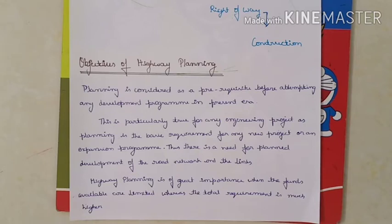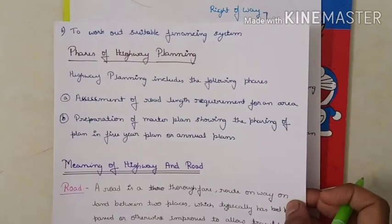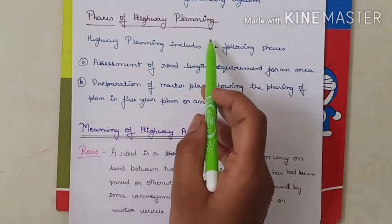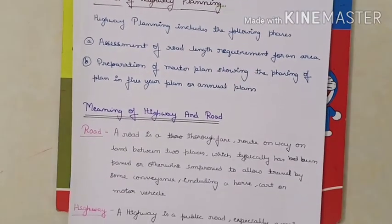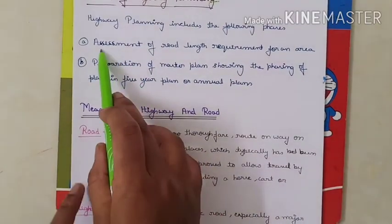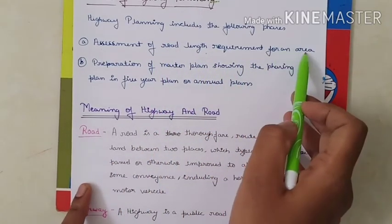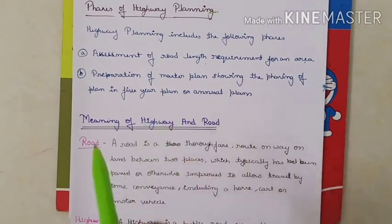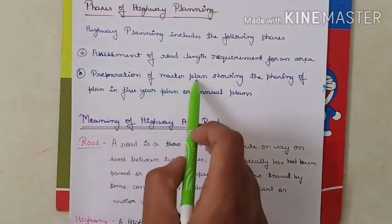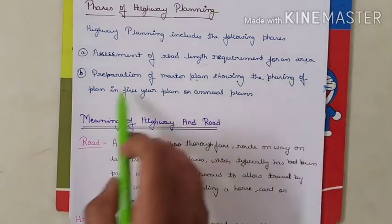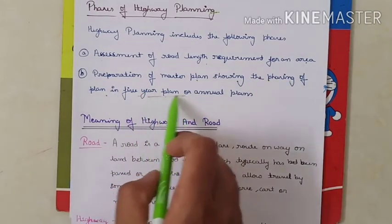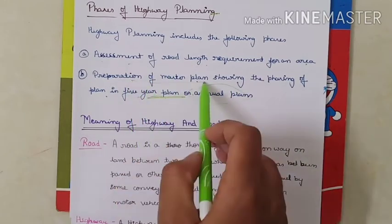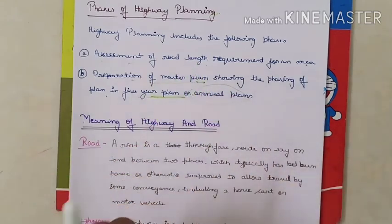There are two main phases in highway planning: one is assessment of road length requirement for an area, and the second is preparation of a master plan showing the phasing of the plan in five-year or annual plans. Initially we assess, then we prepare a master plan.